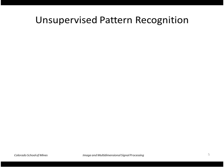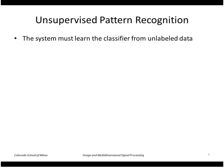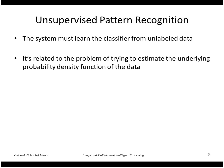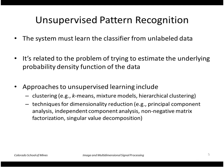First, I am going to talk about unsupervised pattern recognition, where we don't have training data. The system must learn the classifier from unlabeled data, and it is similar to the problem of estimating the underlying probability density function of the data. For example, if your data had two modes in the PDF, the system might recognize that and treat those as two classes. Approaches to unsupervised learning include clustering, and we are going to look at k-means clustering, as well as dimensionality reduction using methods such as principal component analysis.